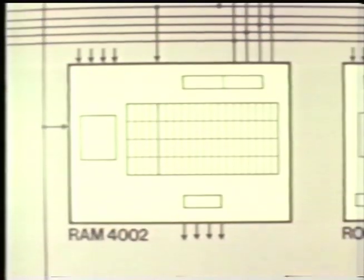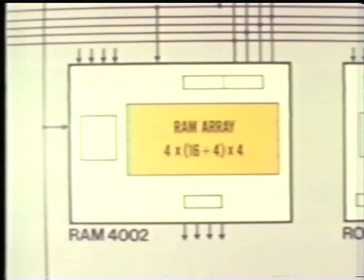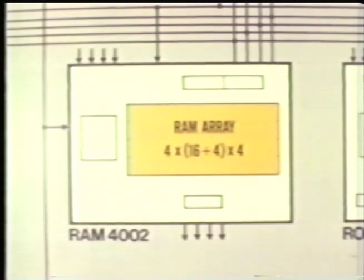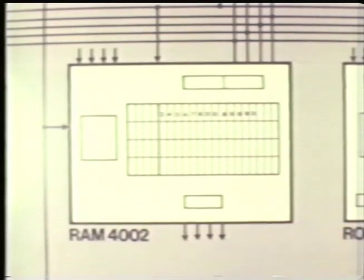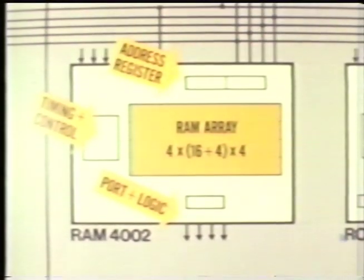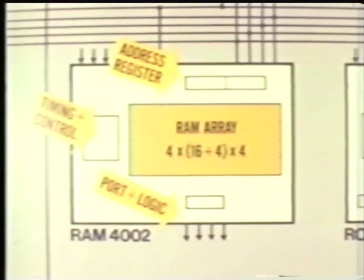The 4001 ROM contains 256 8-bit bytes of instruction storage, an address register, and a four-line port. At the time the 4001 is programmed, the port lines may be connected as inputs or outputs. The 4002 RAM contains 320 bits of memory organized as four registers of 24-bit characters each, with 16 characters per register that may be indirectly addressed, and four status characters directly addressed.